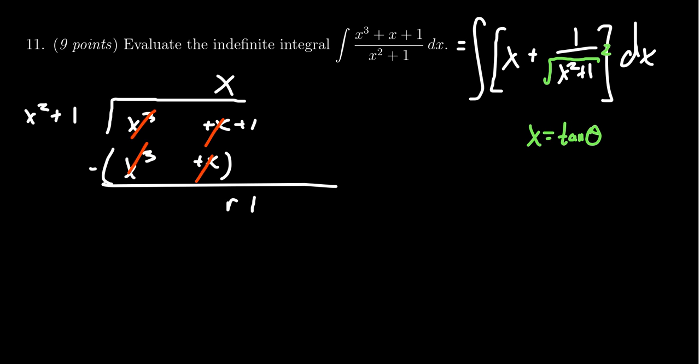In which case, then you get dx equals secant squared theta d theta. And notice the square root of x squared plus 1 would equal secant theta as well.